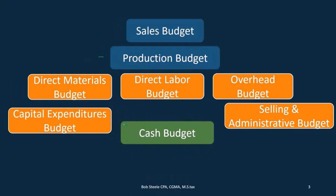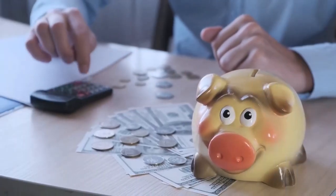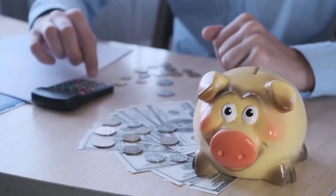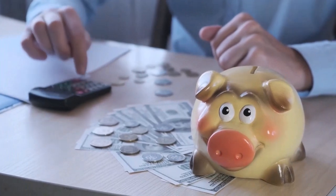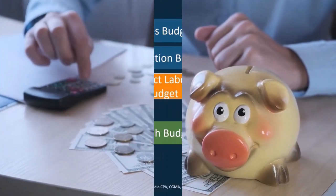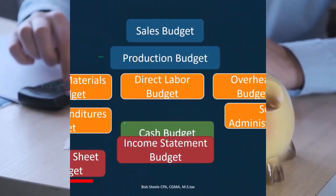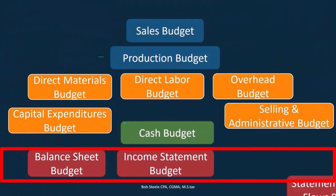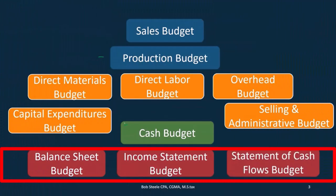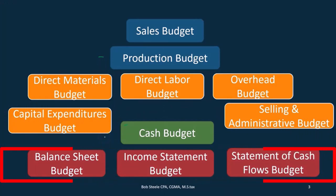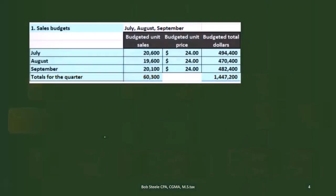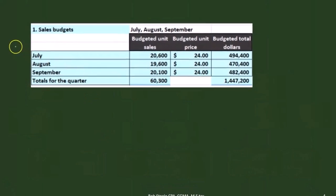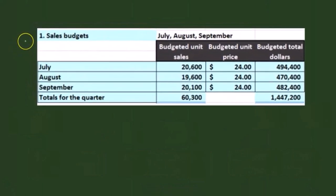We're going to be bouncing back to some of these budgets we've done prior in order to compile the cash budget. Then we can take a look at the balance sheet budget, the income statement budget, and the statement of cash flows after that point — and that's what we'll do next time.